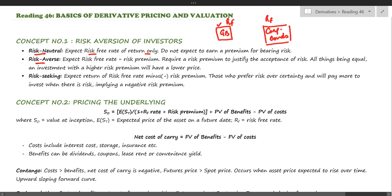Next are risk-averse investors — they expect the risk-free rate of return plus a risk premium if they are taking any risk. This is what any rational investor will do. If a government bond is giving the risk-free rate of return, then to convince a risk-averse investor to invest in corporate bonds, the issuers will have to offer something more than the risk-free rate. So they offer a risk premium — a return over and above the risk-free rate — to lure investors.